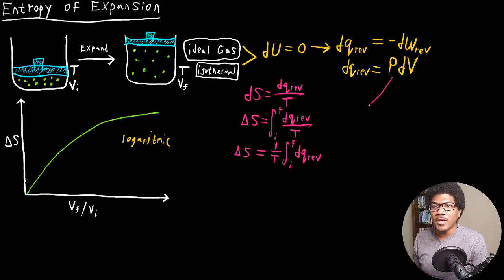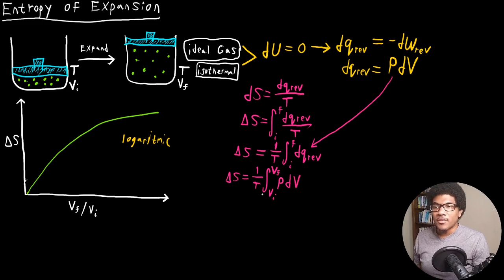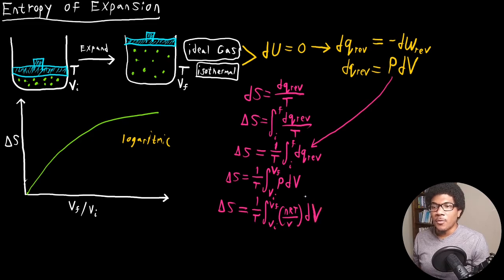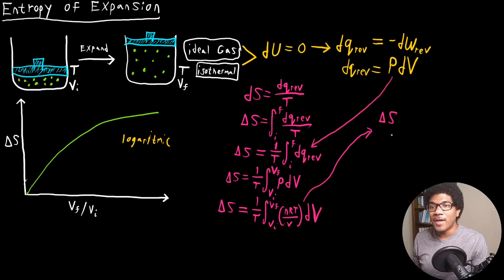Now we plug in our expression for DQ_rev into the integral. We have ΔS equal to 1 over T, with limits of integration from the initial volume to the final volume, of PDV. Since it's an ideal gas, we substitute P = NRT/V, giving us 1 over T times the integral from VI to VF of NRT over V dV. The number of moles, R, and temperature are all constant, so we factor them out and end up with ΔS = NR ln(VF/VI).